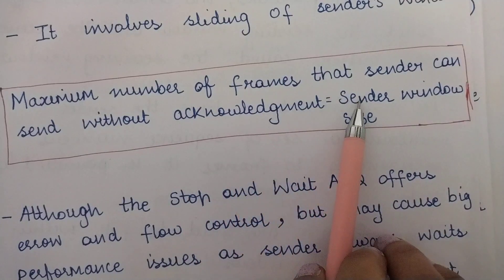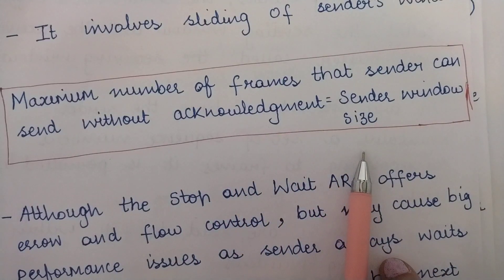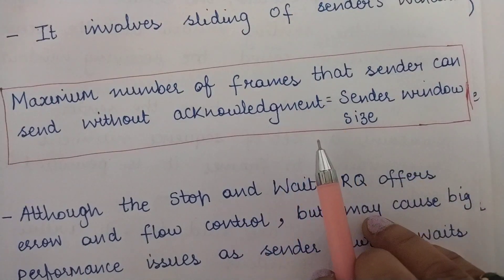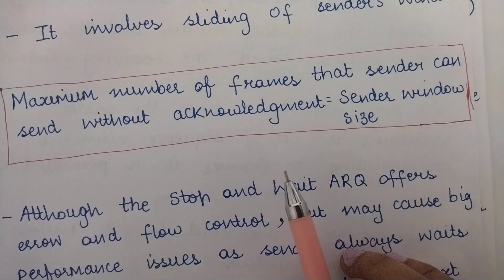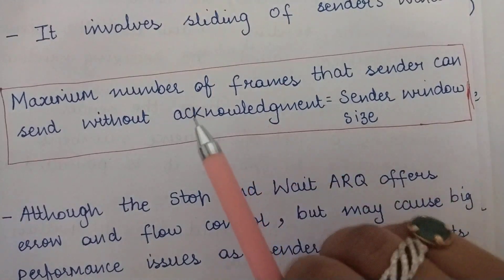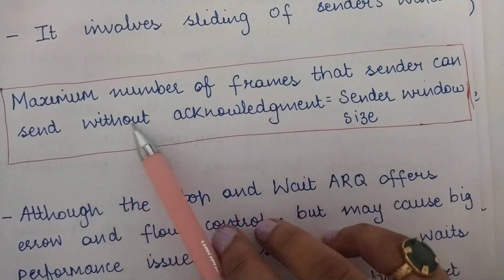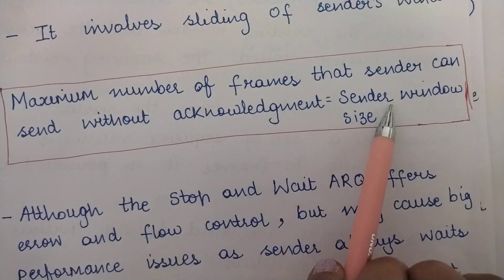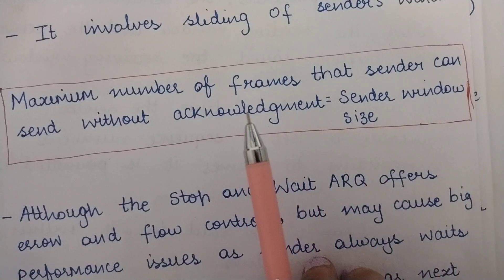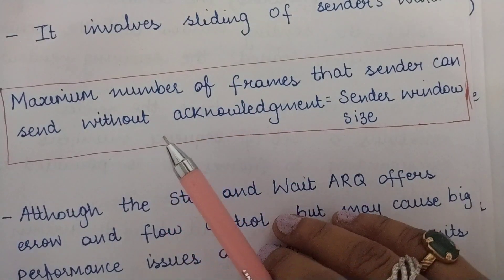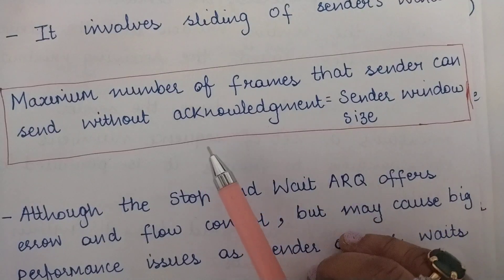The maximum number of frames that the sender can send without acknowledgement equals the sender window size. There is no physical window — this is just a virtual window to help us visualize. The maximum number of frames that can be sent is the sender's window size. For example, if the size of the sender's window is seven, that means the maximum number of frames the sender can send without waiting for an acknowledgement is seven.